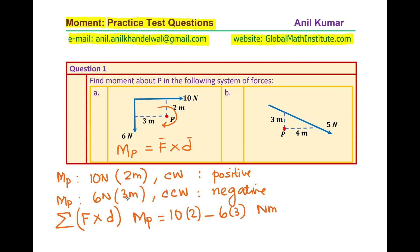So that gives you 20 minus 18 newton meters or 2 newton meters. Since the answer is positive we'll write the solution as 2 newton meters and the direction will be clockwise rotation.